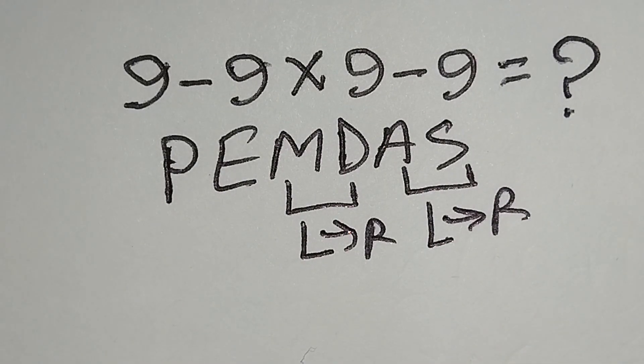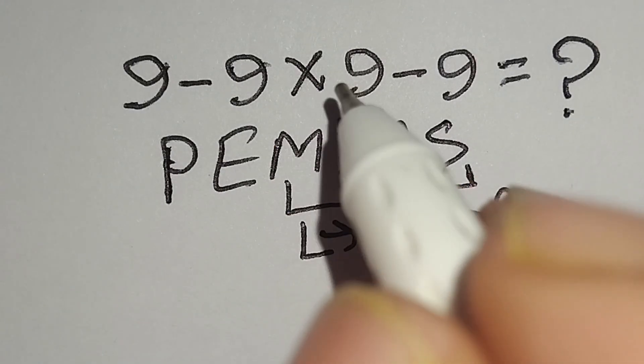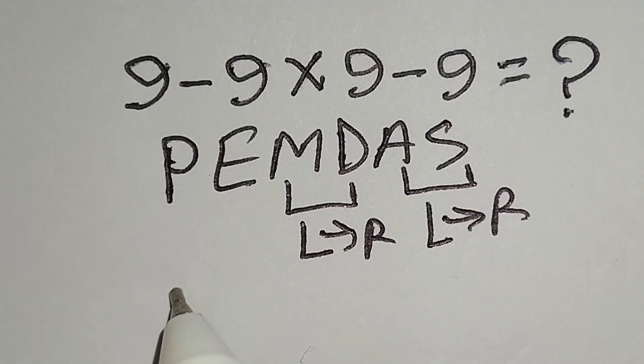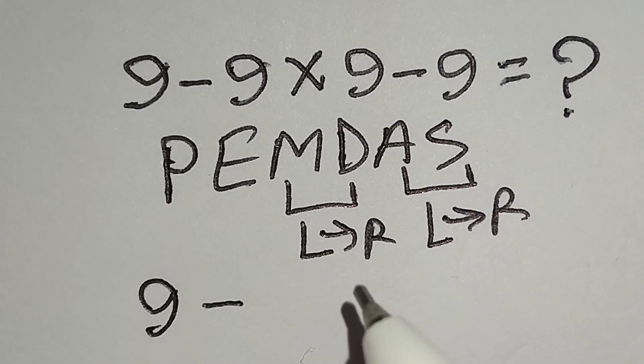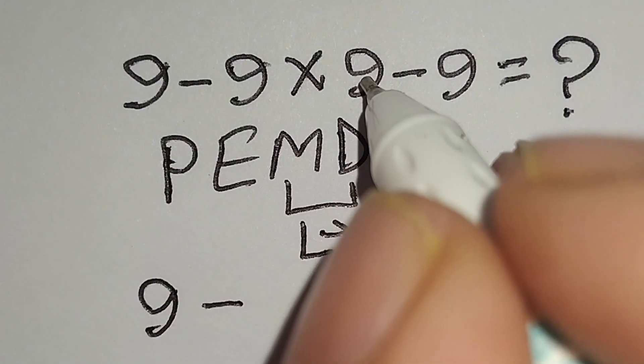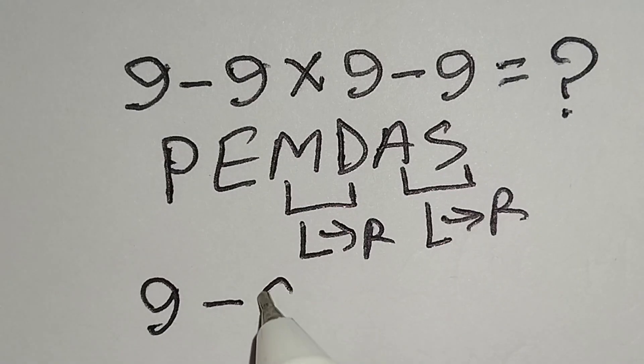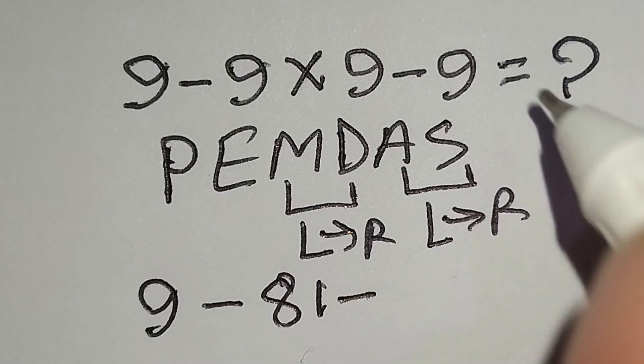Therefore at first we have to work with this multiplication. Here this 9 minus this 9 times 9 gives us 81 minus this 9.